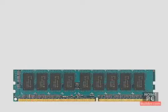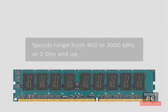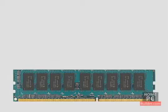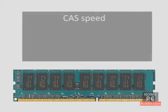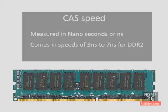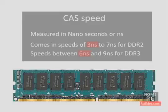The speed of RAM is also important. The speed of memory is measured in MHz and ranges from 400 MHz to 2000 MHz, or 2 GHz, and up. Generally, you should get the fastest RAM the motherboard you choose can handle. Another measurement of RAM speed is called CAS, measured in nanoseconds. It comes in speeds of 3 to 7 nanoseconds for DDR2 RAM, and between 6 and 10 nanoseconds for DDR3 RAM. A lower CAS is better, but unless you're building a high-end system, it's probably not worth paying extra for the lower CAS.